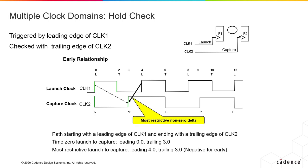The hold check is a little more complicated. We have to understand that whatever edge is launching the data, if the next edge is not launching the data again before the previous one is saved, then you're okay. So, if you launch at 0 and at the trailing edge of 3 the data has not completed saving into FF2, then you don't want the new launch at 4 to give you new data — you would want it to wait until the data is safely stored. If we look at the launch 4, the trailing edge at T3 still hasn't completed saving. That is necessarily the most restrictive edge, and therefore the hold requirement is done at T3 for the hold check. So if the most restrictive launch to capture is 4 and 3, and the data is safely stored, then you're okay; otherwise, you're failing the hold check.